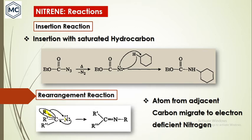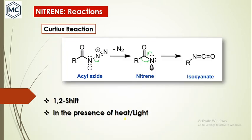The third reaction is rearrangement. In this reaction, the alkyl group on the carbon adjacent to the nitrene migrates to the electron-deficient nitrogen — a 1,2-shift. Such rearrangement occurs, for example, in the Curtius reaction. An acyl azide on thermolysis first gives a nitrene intermediate, then the alkyl group migrates to nitrogen to form an isocyanate. This occurs in the presence of either heat or light.